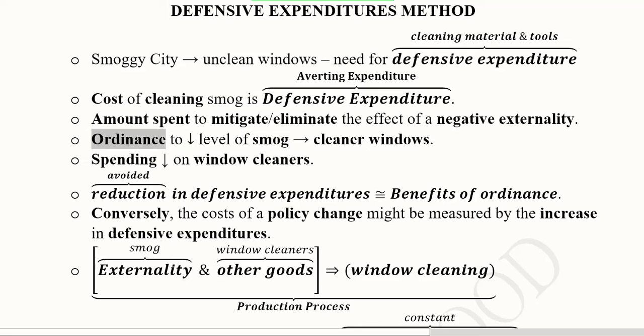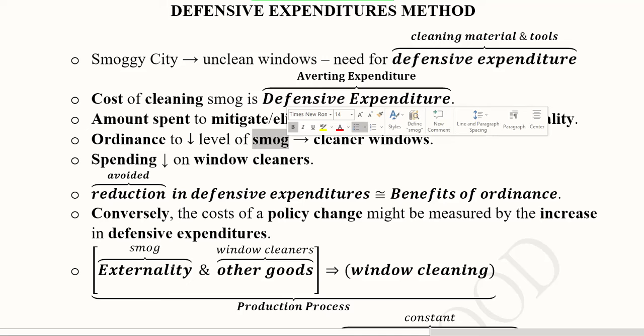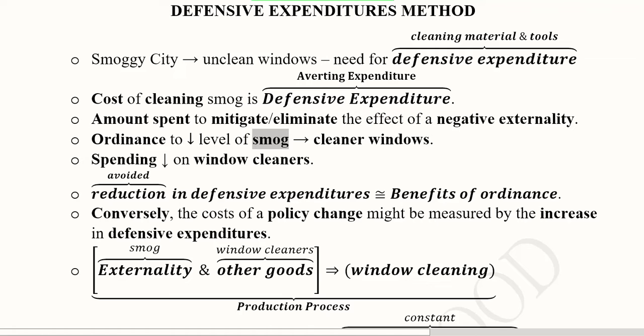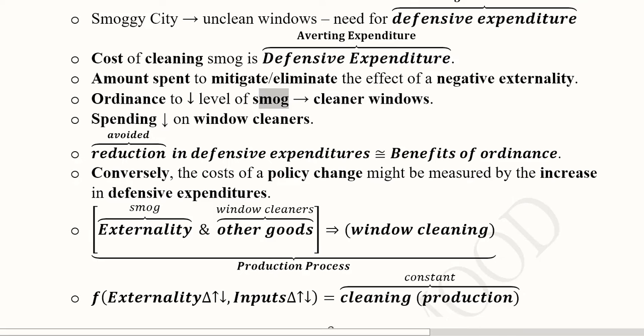For example, if an ordinance is passed, and in that ordinance the effort and order is to reduce the smog in the environment, then there will be cleaner windows automatically. Because due to some regulation, some law, the smog is reduced because of some restrictions on the people who are polluting the environment. So when this happens, we will have cleaner windows.